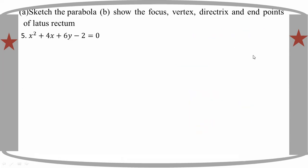Number 2: x squared plus 4x plus 6y minus 2 equal to 0.